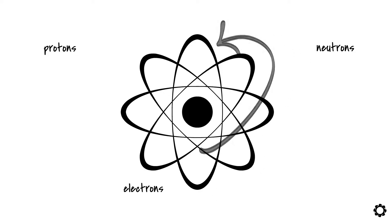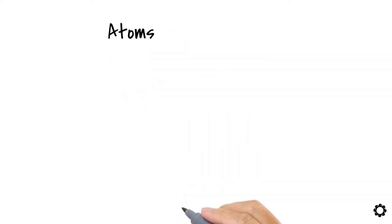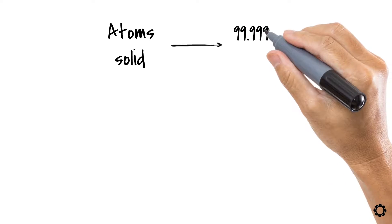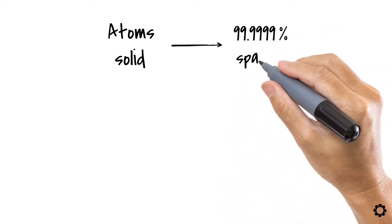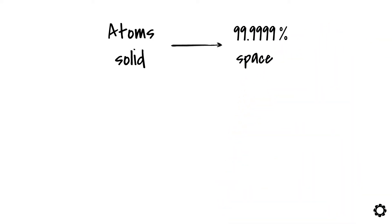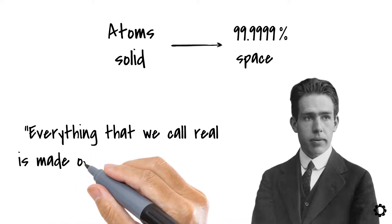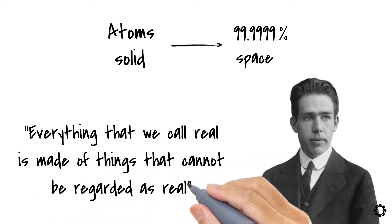Here it comes. In reality, the atoms that form the objects and substances that we call solid are actually made up of 99.9999% space. What? Yes, as the Danish scientist, Nobel Prize winner Niels Bohr said, Everything that we call real is made of things that cannot be regarded as real.